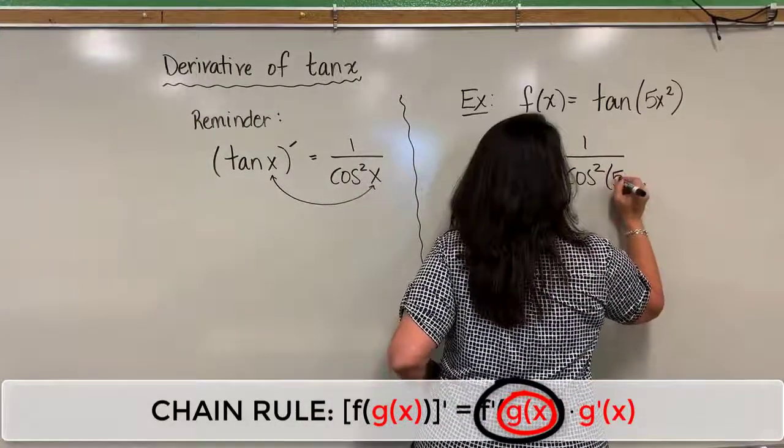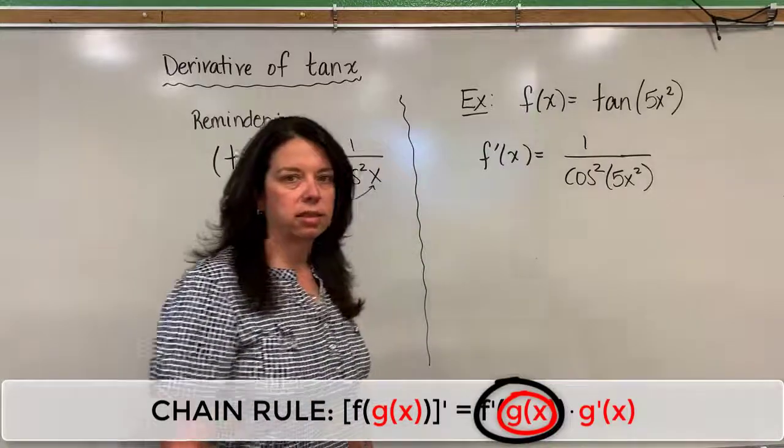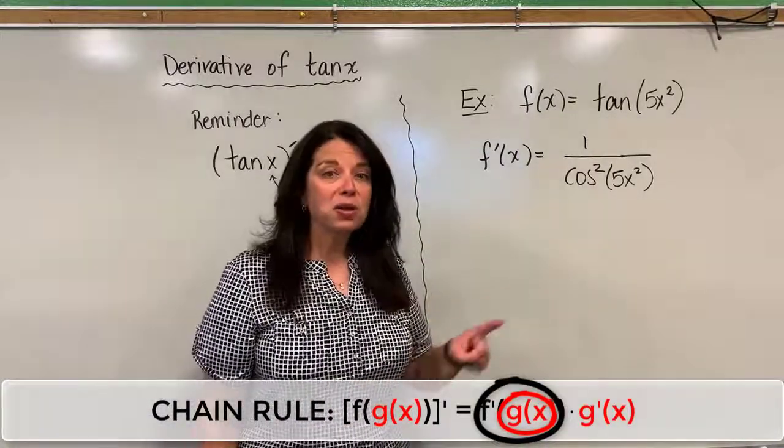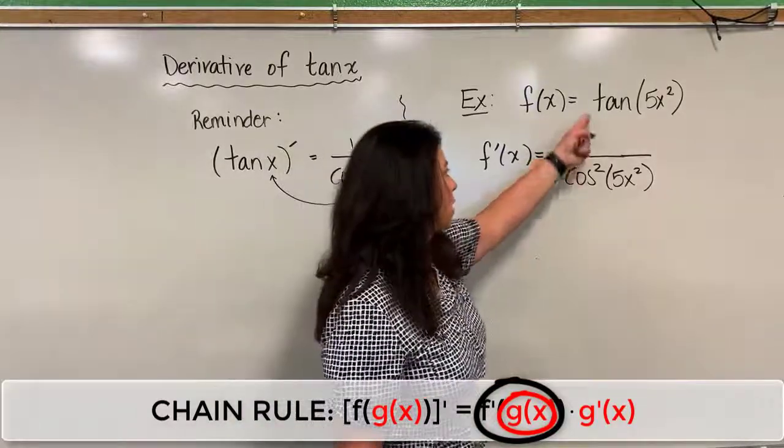So here I have cosine squared of 5X squared in that denominator, but I'm not done because that was only the derivative of the outside function, which was the tangent.